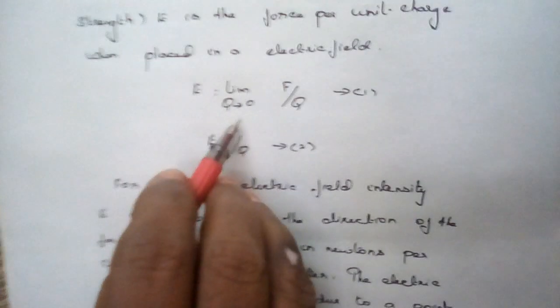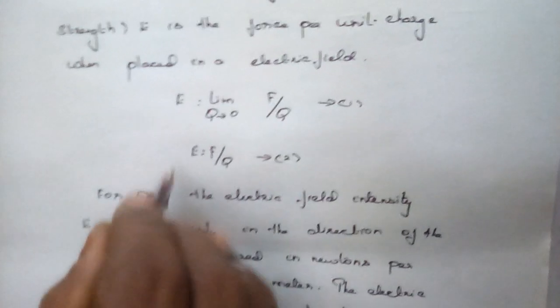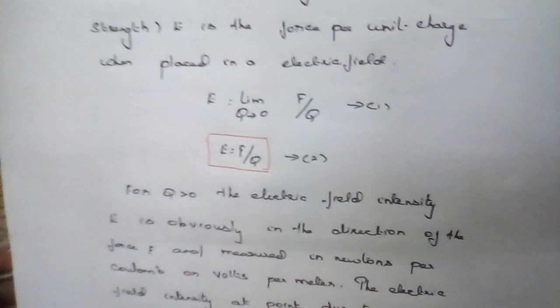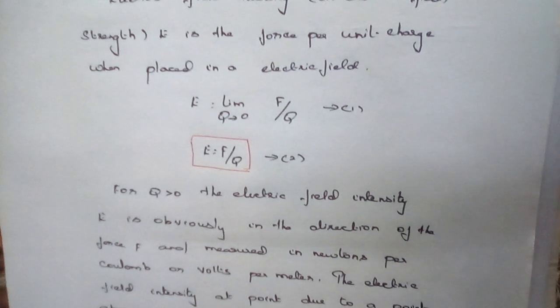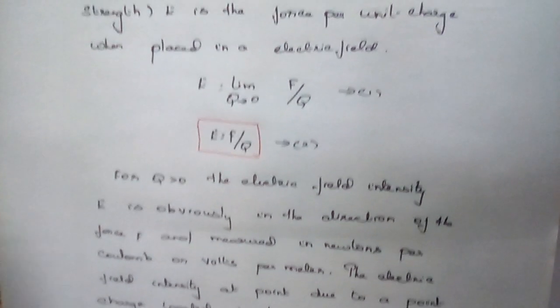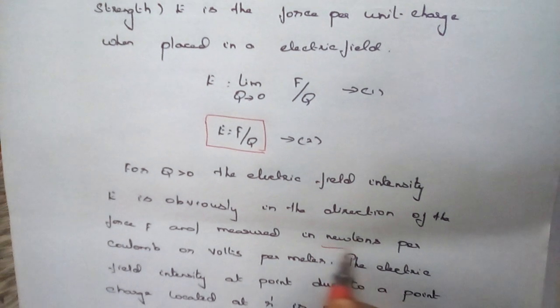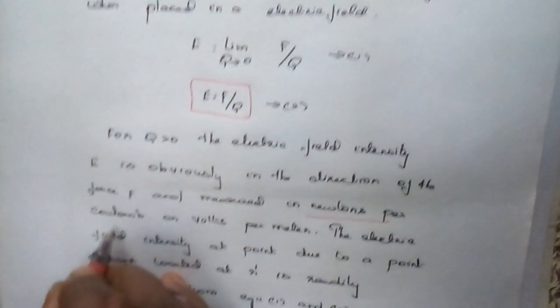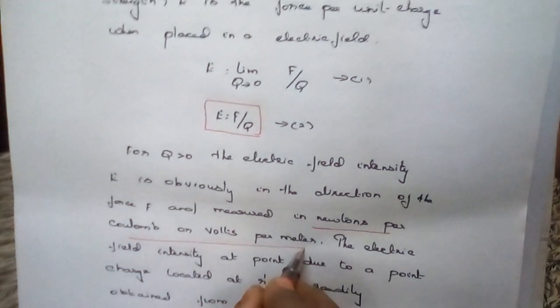In general, the electric field intensity expression is given by: limit as q tends to 0 of F by q. Generally, the field intensity expression is E, which is equal to F by q. If the charge is greater than 0, the field intensity will be measured in the units of newtons per coulomb or volts per meter.